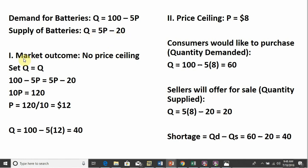We'll first have our benchmark where we have no price ceilings, just a market outcome. So we'll set quantity demanded equal to quantity supplied, setting those two equations equal to one another, collecting the price terms so we get 10P, and adding 20 to 100 we get 120. We find an equilibrium price of $12. Taking that price and plugging it back into the demand or supply equation, we see that the equilibrium quantity is 40 units, 100 minus 60.